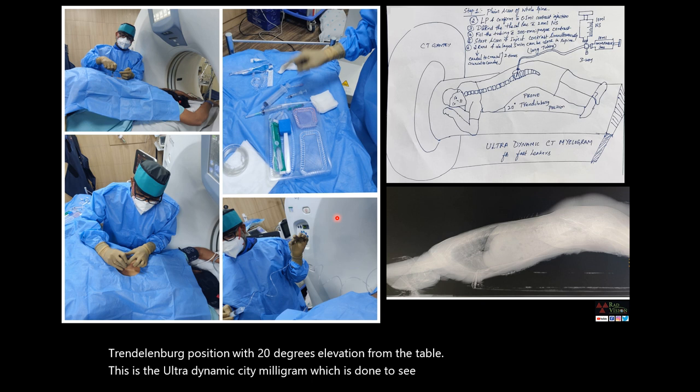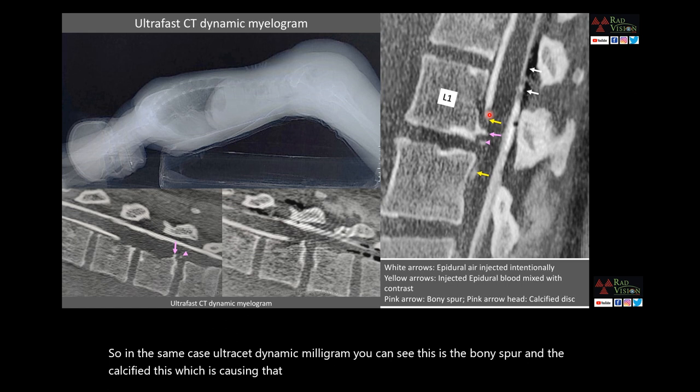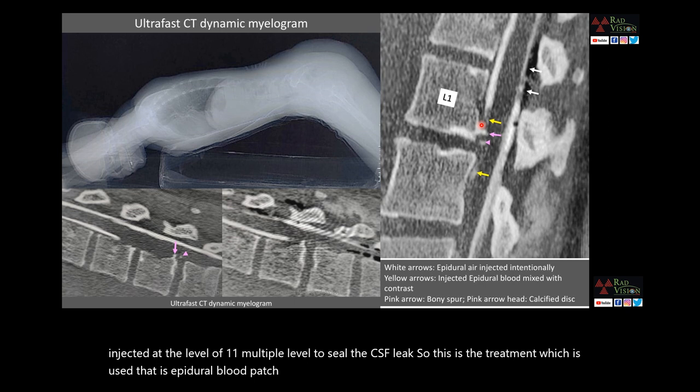This is the ultradynamic CT myelogram performed to see the site and localization of the CSF leak and also for treatment. In the same case, on ultrafast CT dynamic myelogram, you can see the bony spur and calcified disc causing the dural tear with CSF seen in the epidural space. Epidural air is injected, and epidural blood mixed with contrast is injected at the level of L1 to seal the CSF leak — this is the epidural blood patch treatment used to seal the CSF leak at L1 in this case.